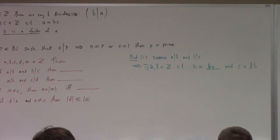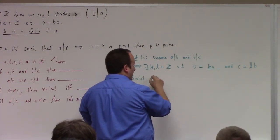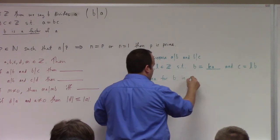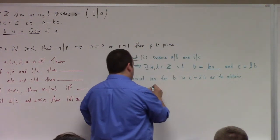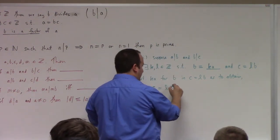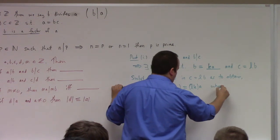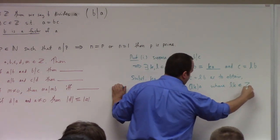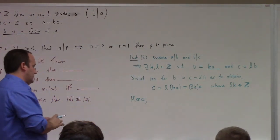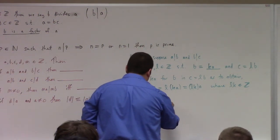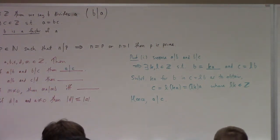Substitute k·a for b in c equals l·b to obtain: c is equal to l·b, but b was k·a, which is equal to l·k times a, where l times k is an integer. Hence, a divides c. So if a divides b and b divides c, then a divides c.